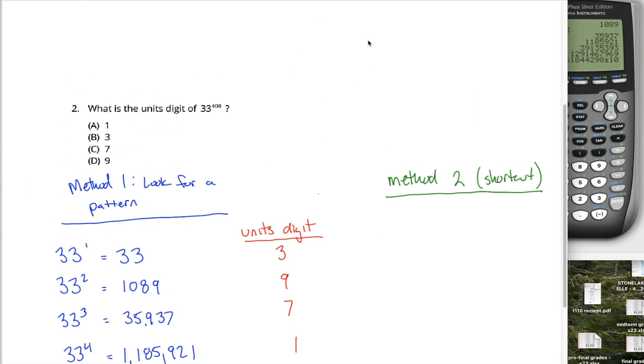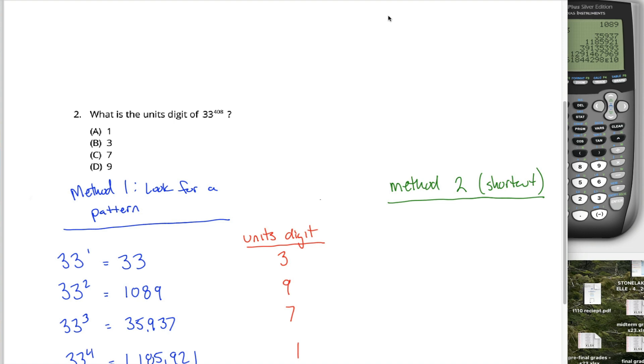So first, why does that work? Think about what happens when you multiply two digit numbers. So I'm just going to choose some arbitrary two digit number. I don't know, 94. Fine. And I'm going to multiply that by some other two digit number, 63. Doesn't matter. The point is, if you think about how you multiply these numbers, the standard multiplication algorithm.